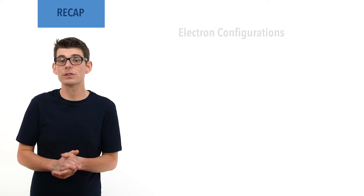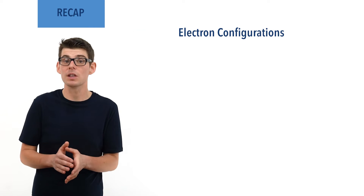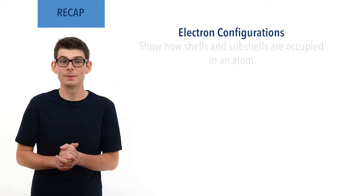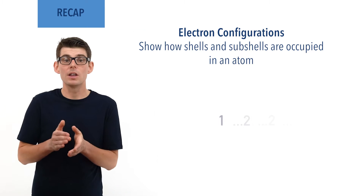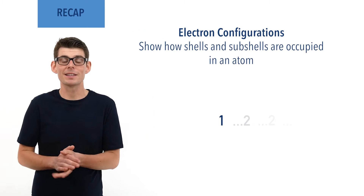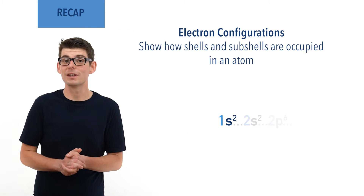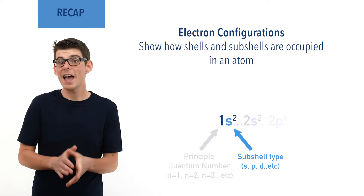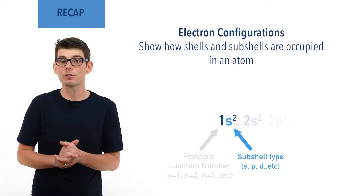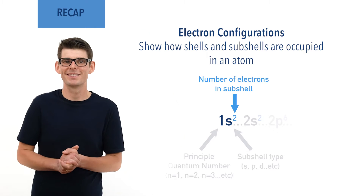Electron configurations are used to show the energy levels and subshells that are occupied within an atom. They are written in a repeating sequence with a number, lowercase letter, and superscript number. The first number represents the energy level, the lowercase letter the subshell, and the superscript number the total number of electrons in the subshell. Recap done — let's go!